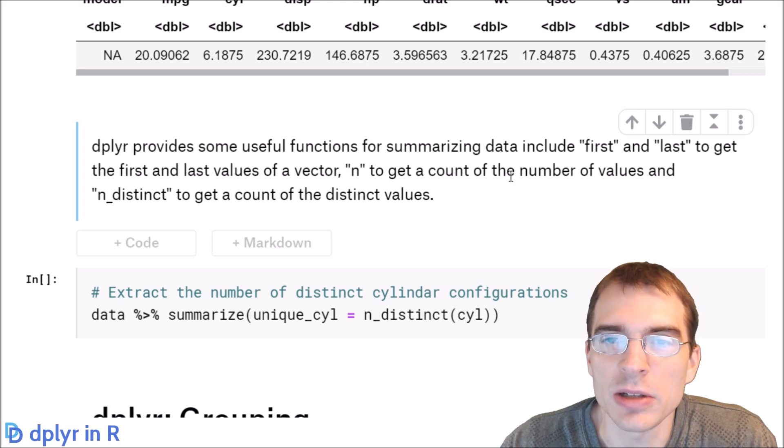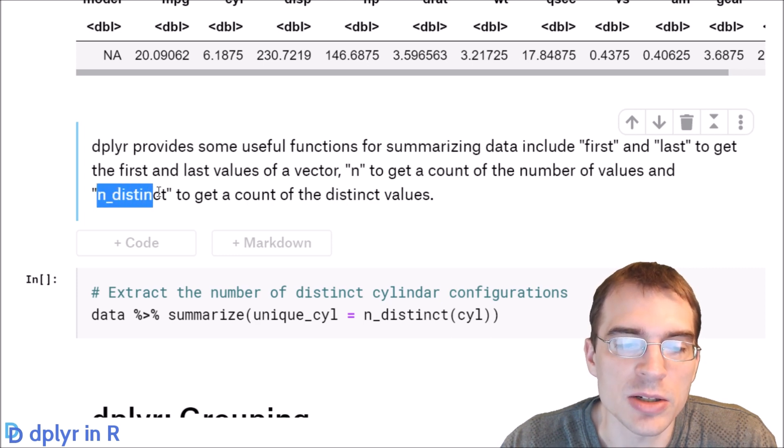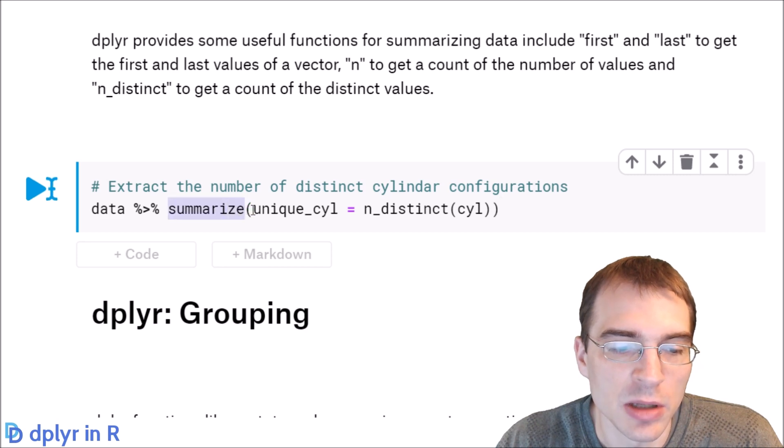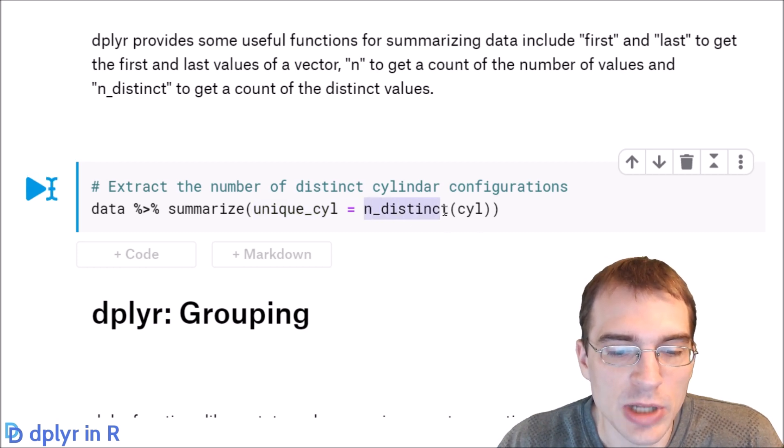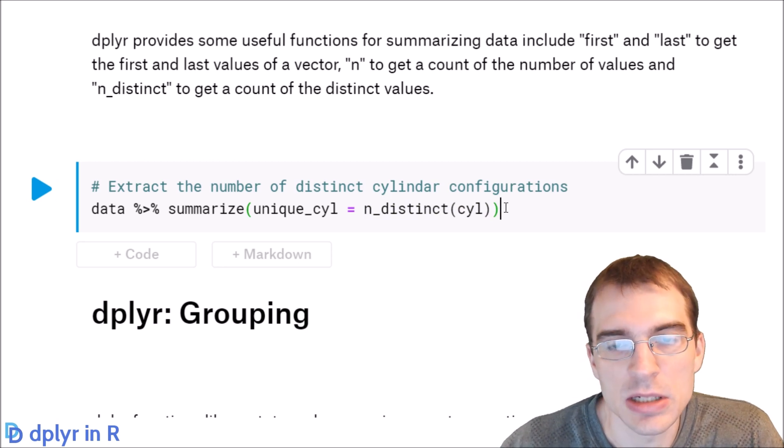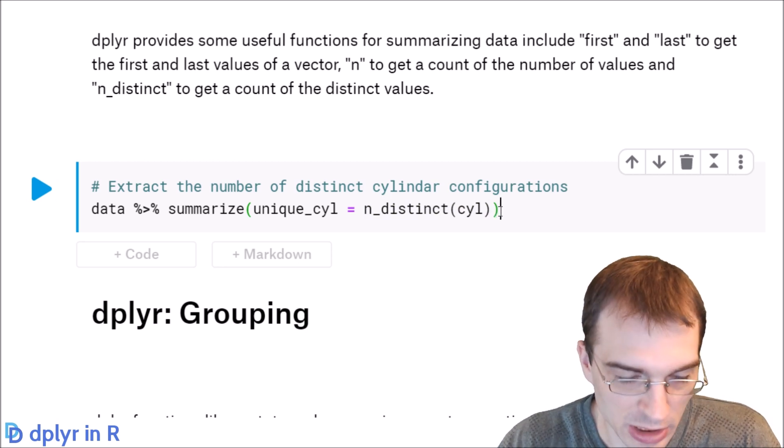So as just one final example of a summary, let's use one of these in our summary function. Let's use n_distinct. So here we're just piping data to summarize again. We're going to call this unique_cyl because we're extracting the number of different unique cylinders. I'll use n_distinct on the cylinder column, and that will show us how many different cylinder configurations there are in this data set.